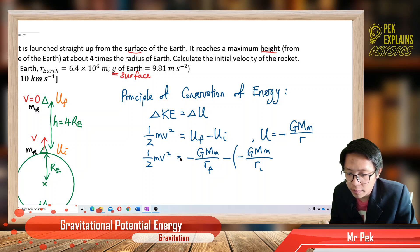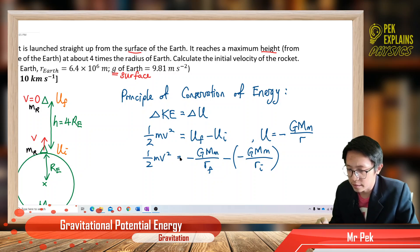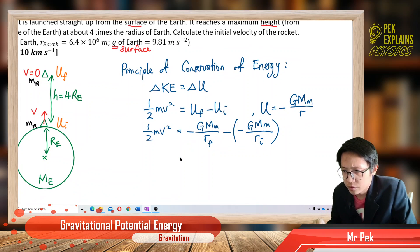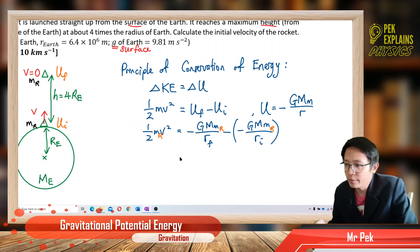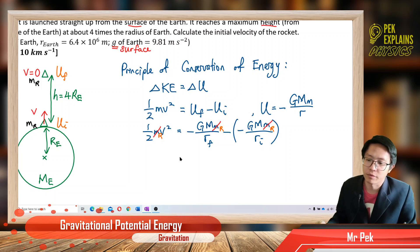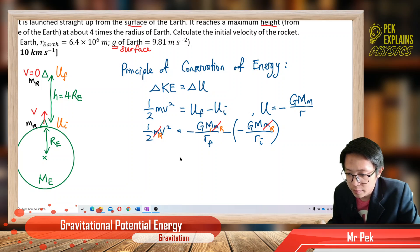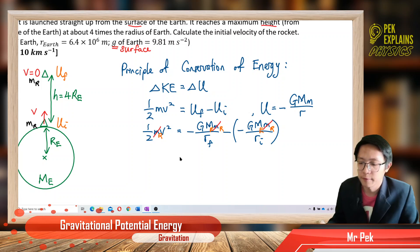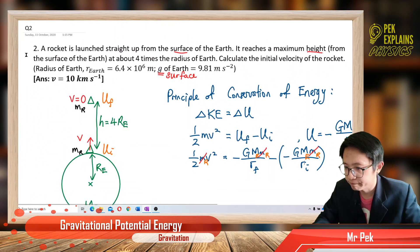Let's identify the masses. The small m is the mass of the rocket, and the big M is the mass of the Earth. We can cancel the mass of the rocket from both sides. The big M is the mass of the Earth. However, the mass of the Earth was not provided in the problem.